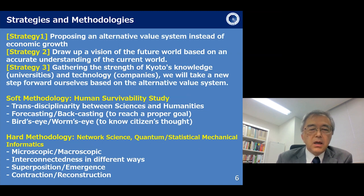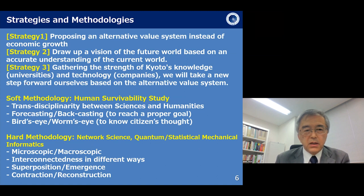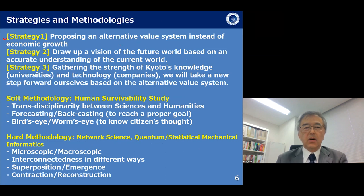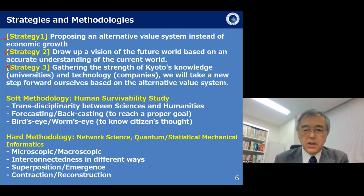I define the strategies and methodologies to answer today's question. I have already defined two targets, and in addition, I define three strategies. The first strategy is proposing an alternative value system instead of economic growth. The second strategy is to draw up a vision of the future world based on an accurate understanding of the current world. The third strategy is gathering the strength of Kyoto's knowledge and technology, and taking a new step forward based on the alternative value system.